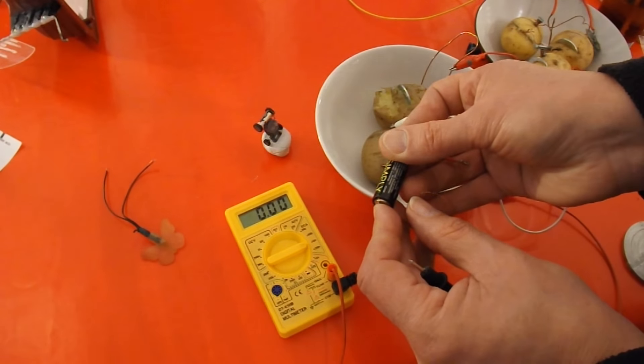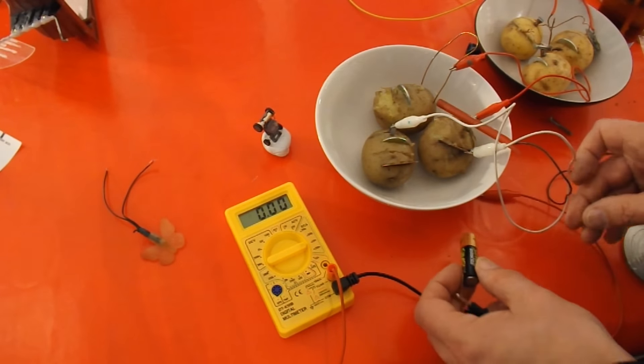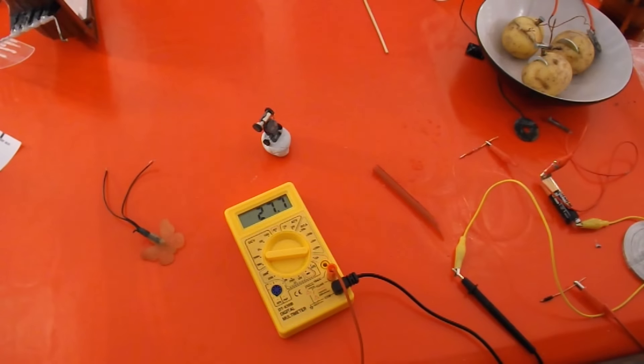An ordinary one and a half volt battery, motor's spinning. The motor is drawing nearly 30 milliamps from that battery.